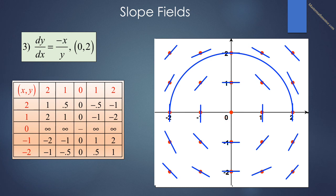Here is the specific solution going through the point (0, 2). At (0, 2), the slope is horizontal. As we move to the right, the slopes get steeper and negative, and at the point (2, 0) the slope is vertical. The same is true on the left side — the slopes get positive but steeper, and at the point (-2, 0) the slope is vertical. So our shape is a semicircle. Note that we do not continue the specific solution down into the third and fourth quadrants, as the result would not be a function.